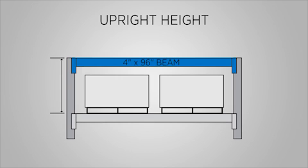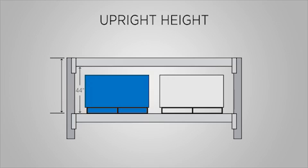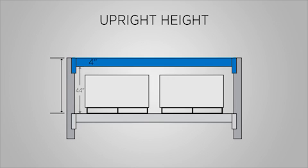Our example uses a 4-inch high by 96-inch long beam. You can add the clear height requirement, 44 inches, to the height of the beam, 4 inches, to figure out where the top of beam levels will be placed, levels at every 48 inches.